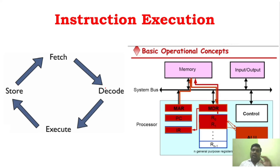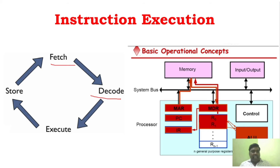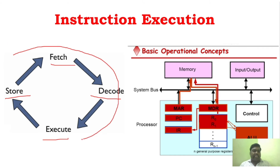Before starting instruction sequencing, I'd like to refresh the instruction execution part again. We have already seen this concept in previous videos — the basic operational concept. For any instruction to be executed, it has four different phases: first is fetch, then decode, then execute, and then store. First it has to fetch the instruction, then decode it, then execute it, and after executing it has to store the result. This is the normal instruction cycle.